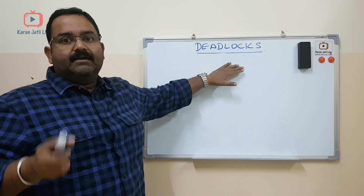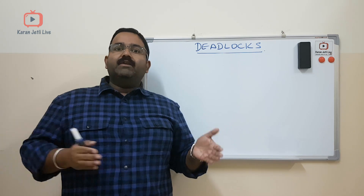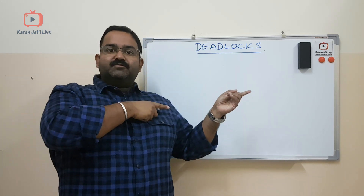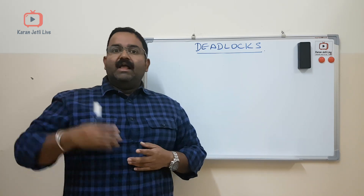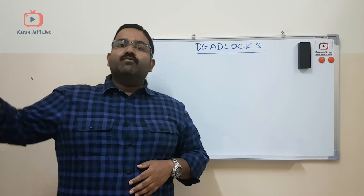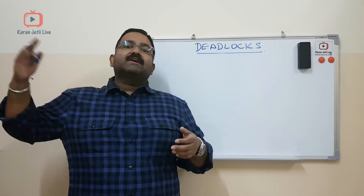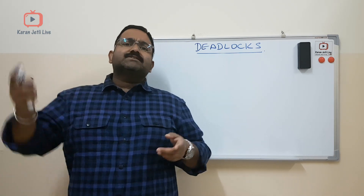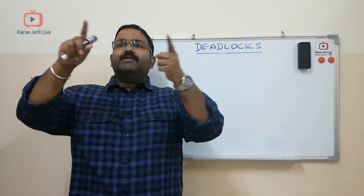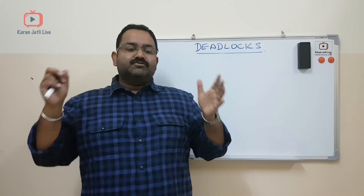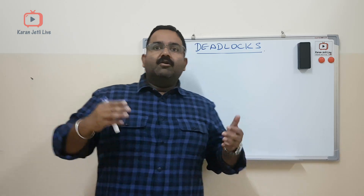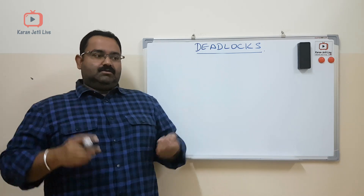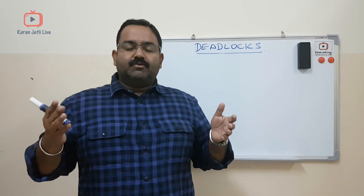So what is a deadlock? Deadlock is a condition when one process is having some resources and waiting for some other process to release some resources so that the first process can finish its processing. At the same time, the second process is also waiting for some resources which are assigned to some other process, and the third process is also waiting for some resources which are assigned to the first process. So all of them are waiting for each other to release resources, and none of them is making any progress. This condition is called deadlock.